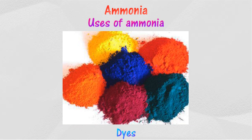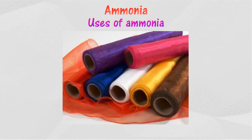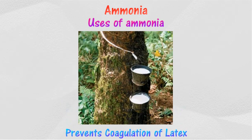When nitric acid reacts with certain compounds, explosive substances are produced. Ammonia is used in colorings for textiles, paper, and hair dye. It is also used as a cooling agent in refrigerators and air conditioning units, and is used to synthesize synthetic fabrics such as nylon fibers.